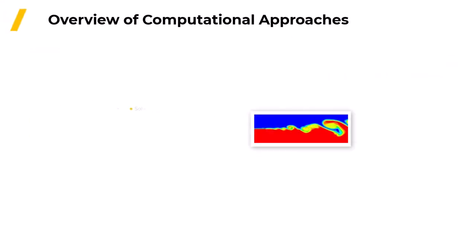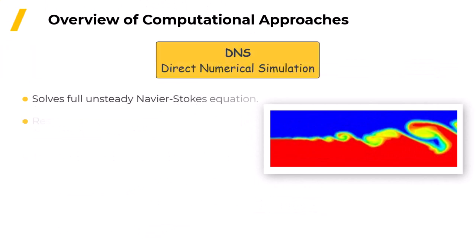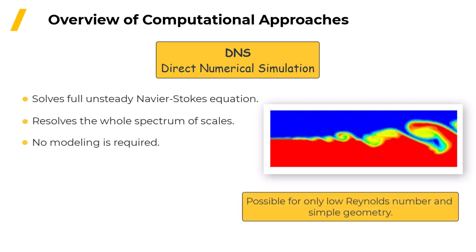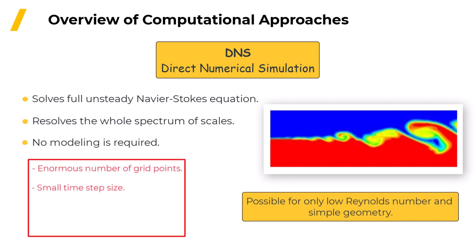In theory, if unlimited computing power and speed were available, you could create an extremely fine grid and directly simulate all of the unsteady turbulent motions responsible for causing the dye to mix and disperse. This is called direct numerical simulation or DNS. But in reality, it's only currently possible for low Reynolds number and simple geometry. The enormous number of grid points and extremely small time step sizes that are necessary make this impractical for any engineering application.